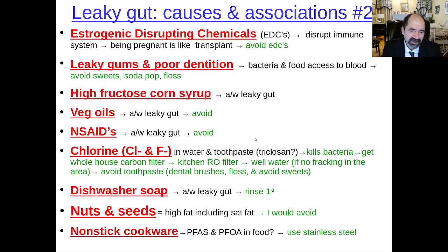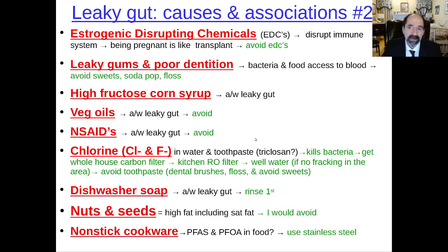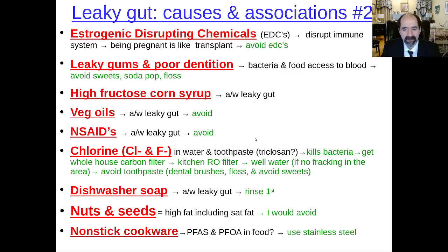Nuts and seeds are high in fat — I would avoid them, including because they have a lot of saturated fat. With a person who has a bad autoimmune disease, they're going down the tubes and they have to try to get better. Anything that might be making you sick, avoid it. Non-stick cookware — I don't think you should ever use it. There's a potential for PFAS and PFOA getting into the food. It's better to use stainless steel.